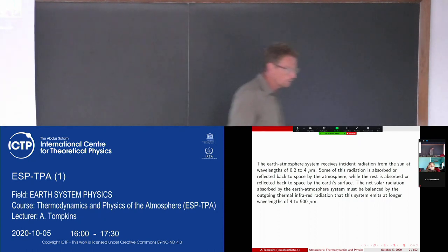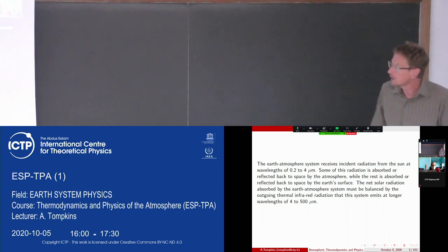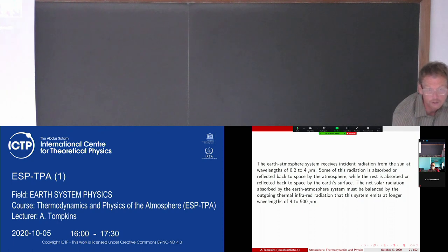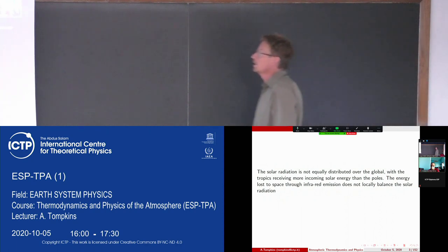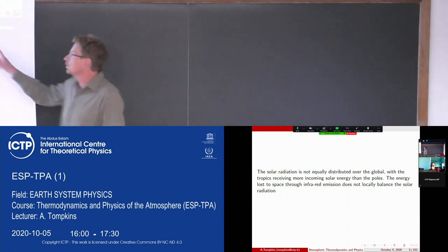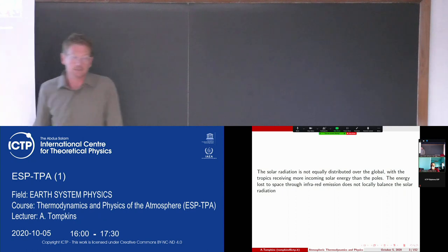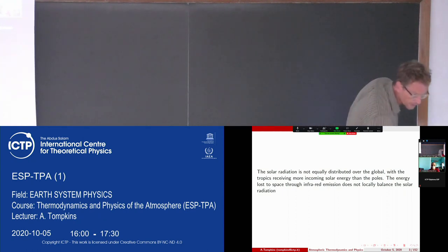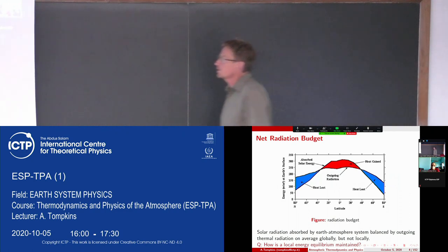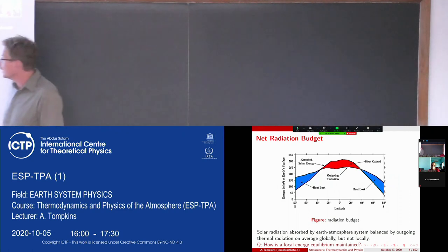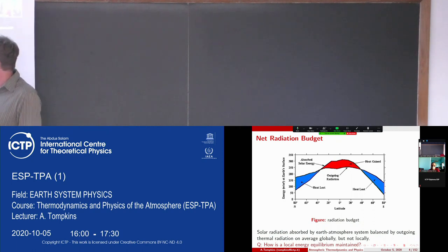The Earth-atmosphere system basically receives radiation from the Sun, and most of that energy is in the wavelength range of 0.2 to 4 microns. Some of this radiation is absorbed by the surface or reflected back to space by the atmosphere, while the rest is absorbed by the atmosphere. The Earth itself, being at a much lower temperature, emits radiation at a much longer wavelength. And radiation is not distributed equally over the globe — the tropics receive much more energy from the Sun.